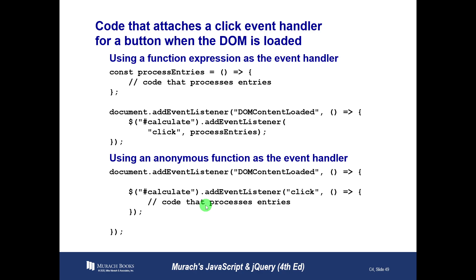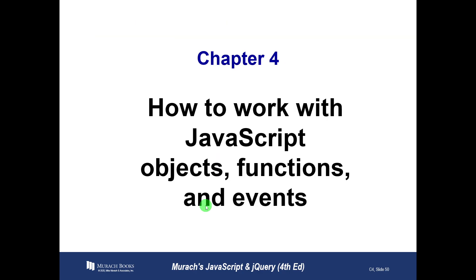So we talked about anonymous functions and event handlers in this video. In the next video, we're going to look a little bit more at the event object, which is generated when one of these events happens.